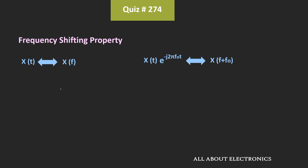Similarly, here we can also use the frequency shifting property. According to the frequency shifting property, if X(f) is the Fourier transform of the signal x(t), then for the signal x(t) times e to the power minus j·2π·f₀·t, the Fourier transform will be equal to X(f - f₀). Or in other words, for X(f - f₀), the inverse Fourier transform is equal to x(t) times that exponential.